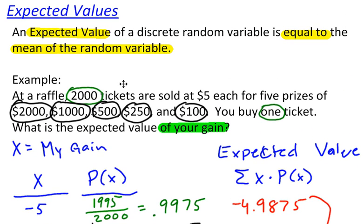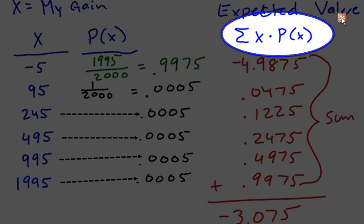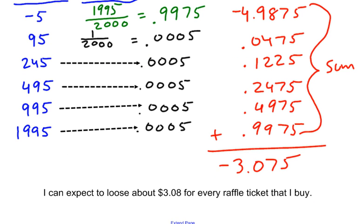You usually have a word problem. You take that word problem and set up your probability distribution. And then once you have your probability distribution, find the mean of that probability distribution by using this formula. And then once you have your mean, that is also your expected value. I guess my time is up.